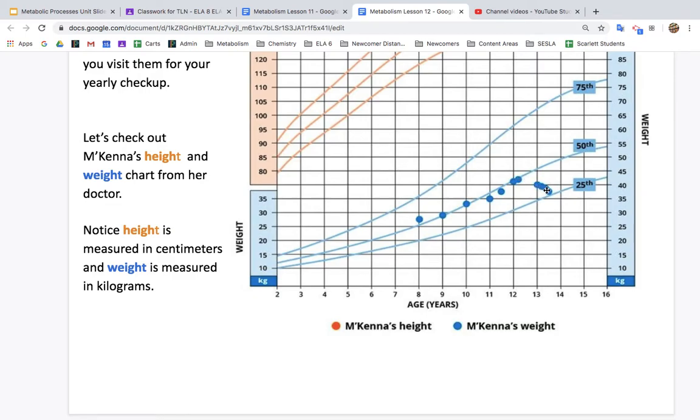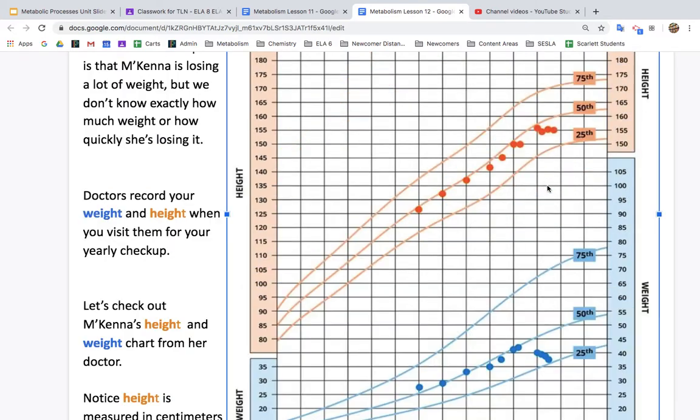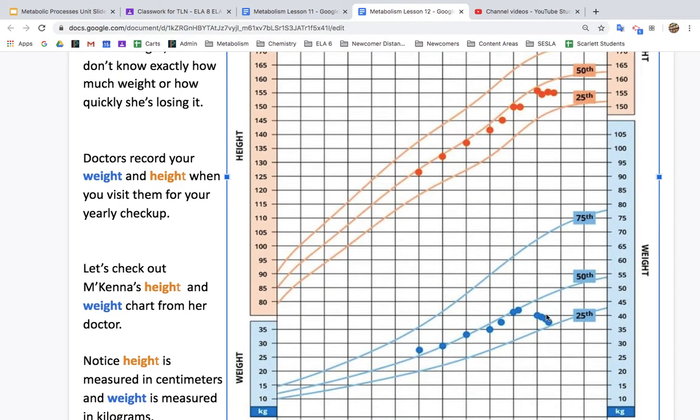So not only is she losing weight, but she should also be gaining weight because she's getting older and taller. So this is troublesome. So I might say the pattern I noticed is that when she got sick, her weight became a lot less than average. In fact, now she's almost in the 25th percentile.